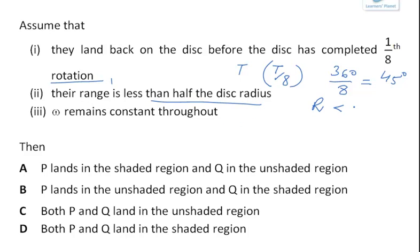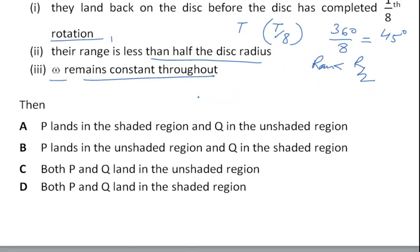Their range is less than half the disk radius. So the range is less than R by 2 and omega remains constant throughout.